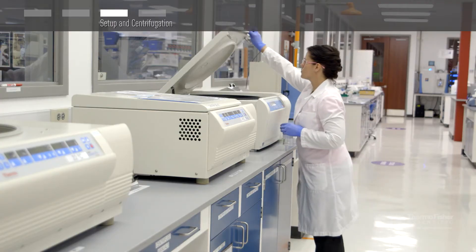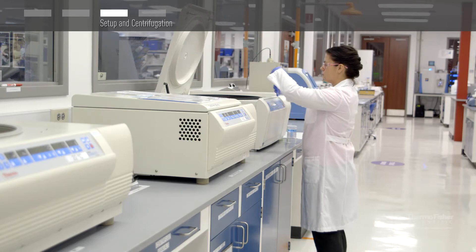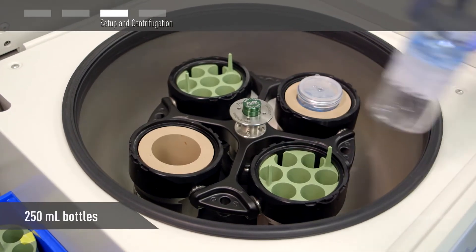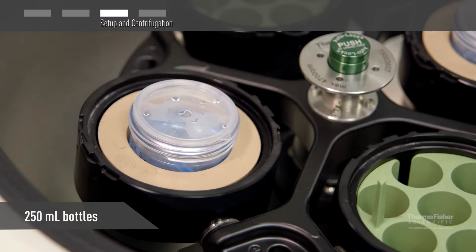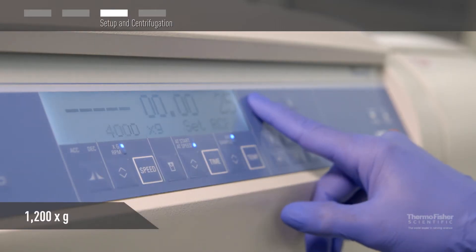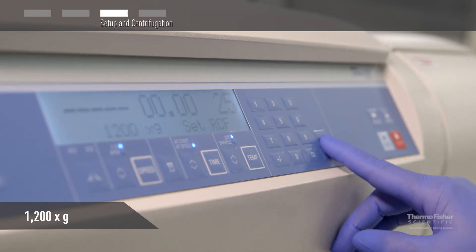Place capped concentrator into a swinging bucket rotor as shown here or a fixed angle rotor that accommodates 250 milliliter bottles. Make sure that the concentrator has a proper counterbalance. Centrifuge up to 1,200 times G until your desired concentration factor is achieved.